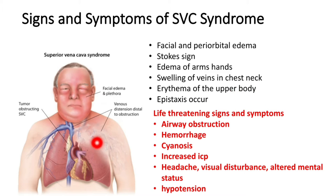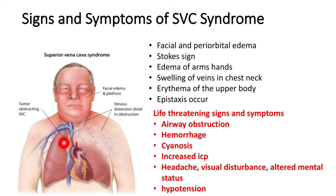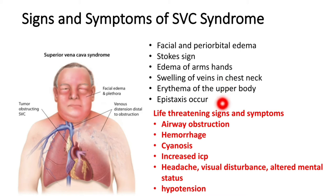The increased pressure inside the veins can lead to distention of veins of the chest and neck region, and discoloration of the upper body because of these distended veins. Epistaxis can occur because of high pressure in the veins — nosebleeds can occur. These are not life-threatening conditions because of collateral circulation providing drainage from the head, neck, and thorax region.